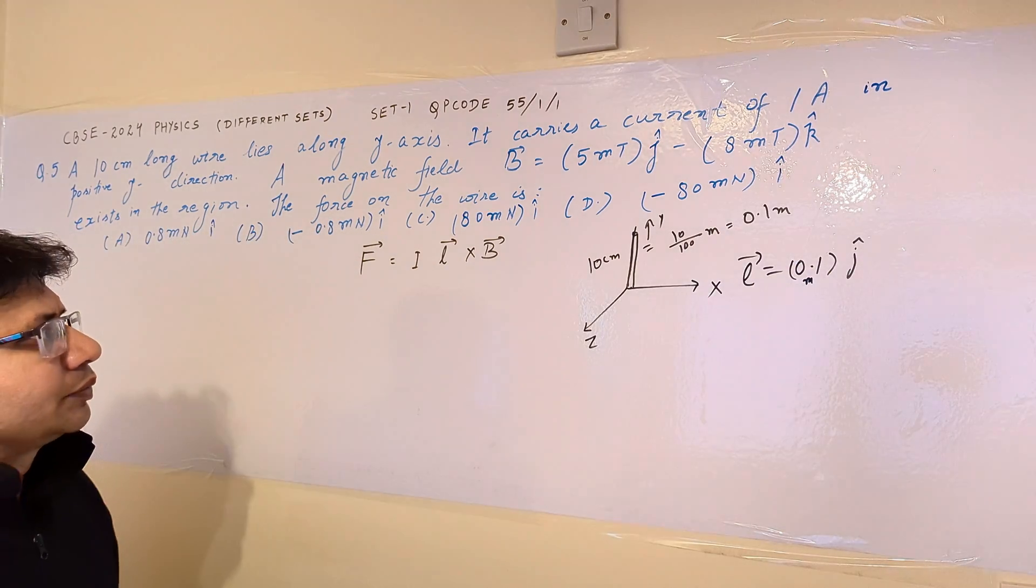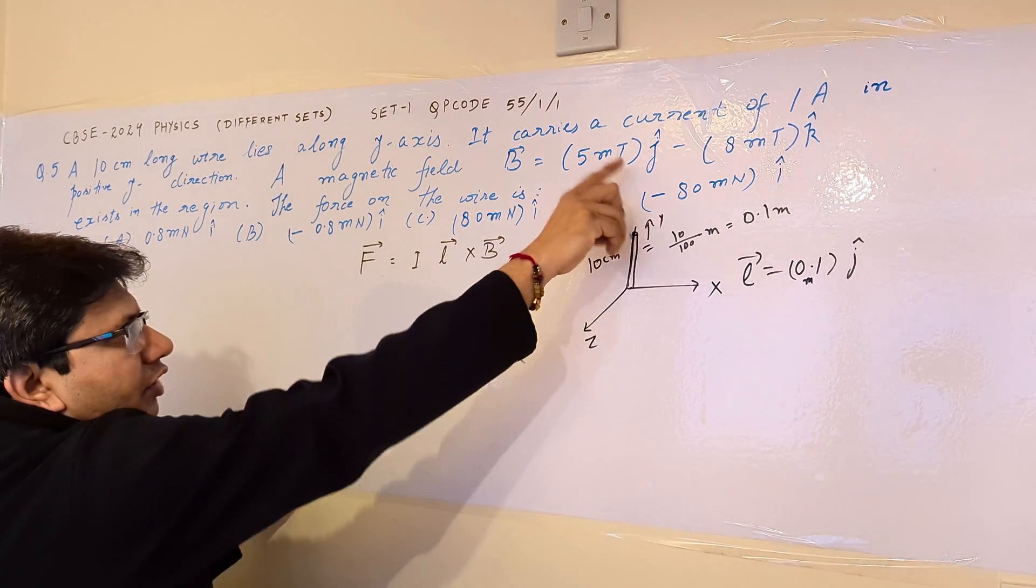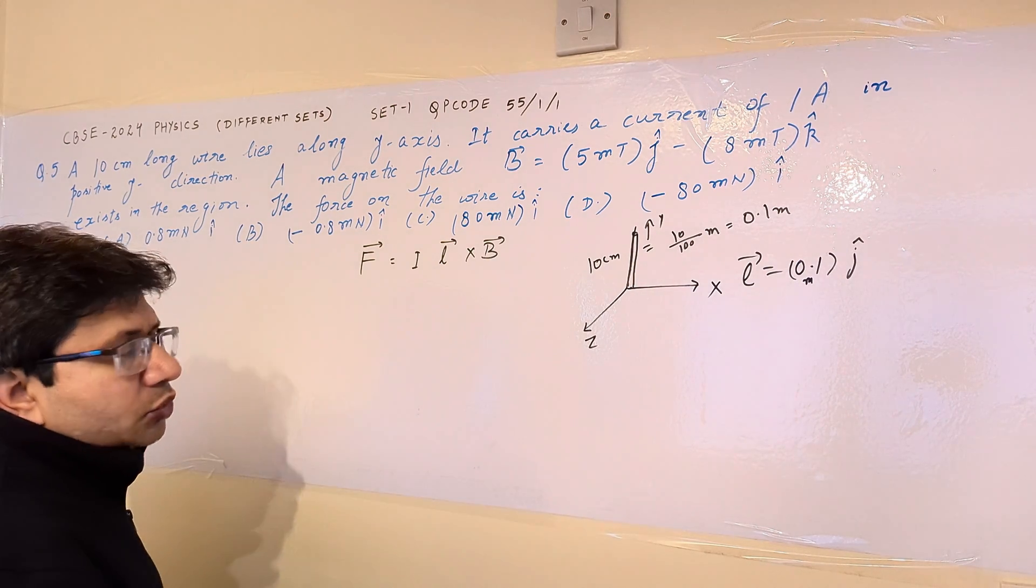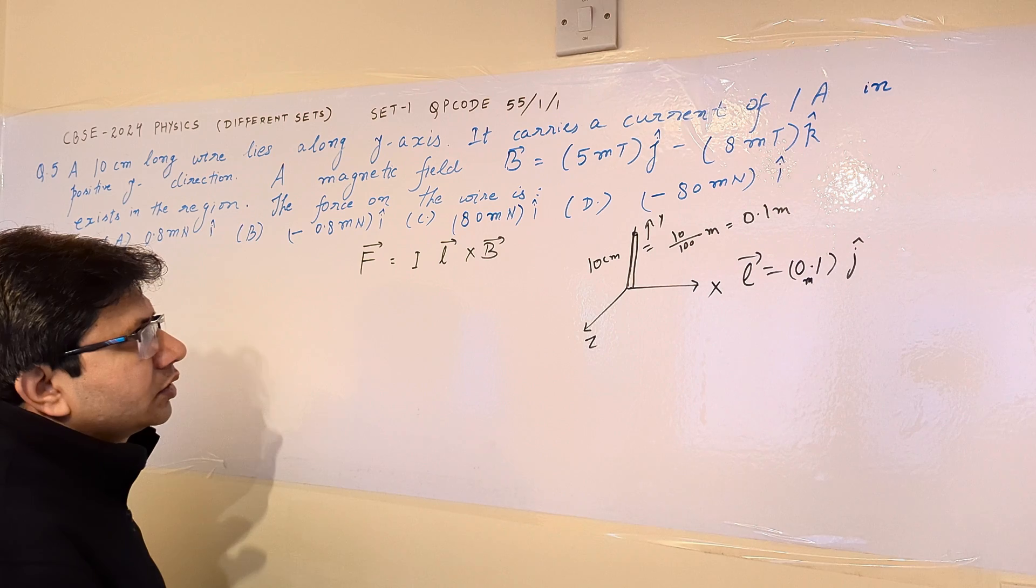This is the length vector and B is given as 5 millitesla J cap minus 8 millitesla K cap. Now we have to use one more concept here to find out the vector.